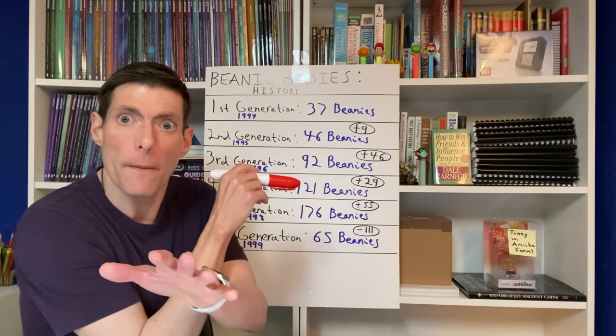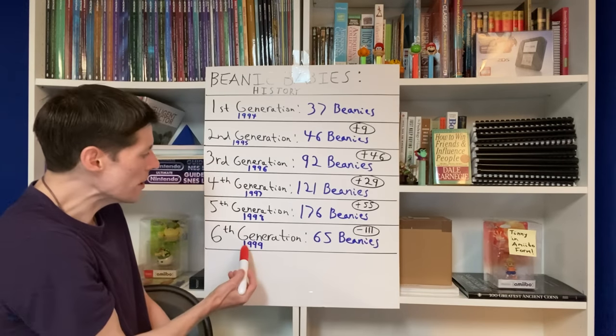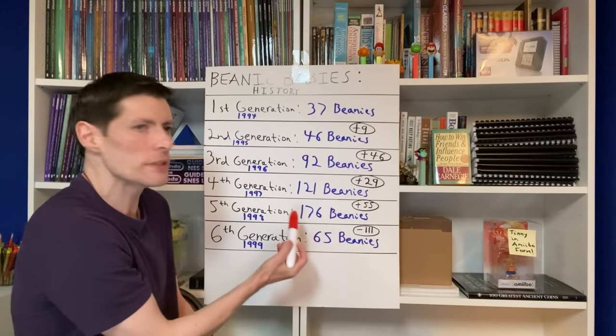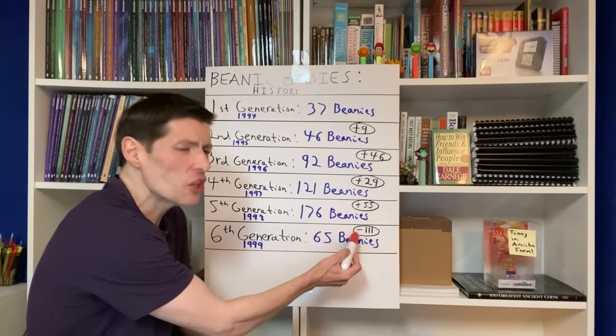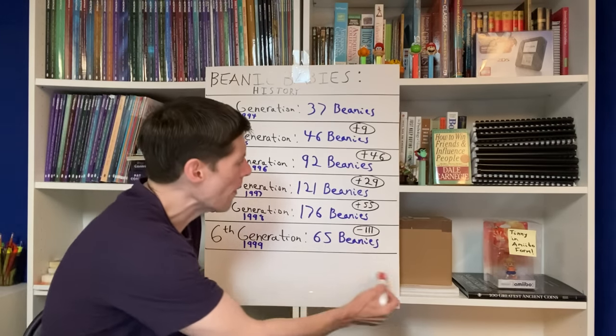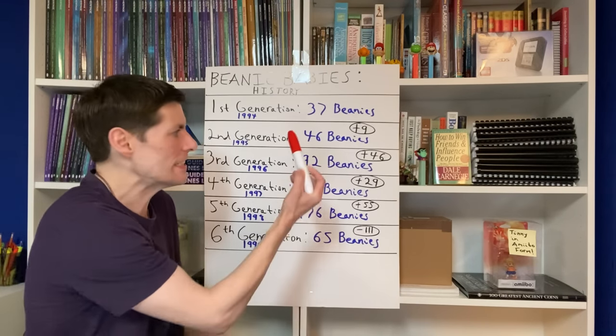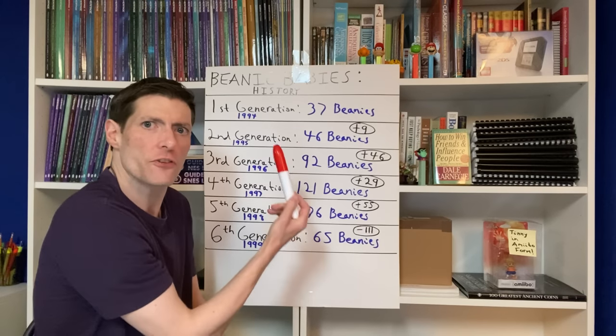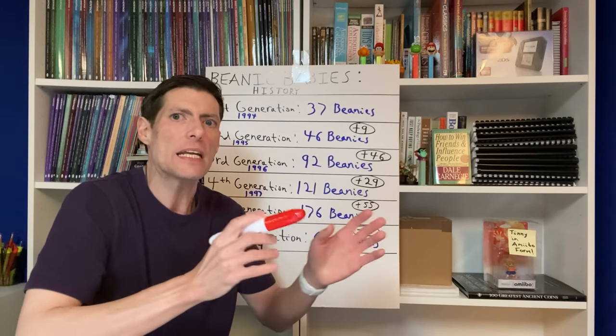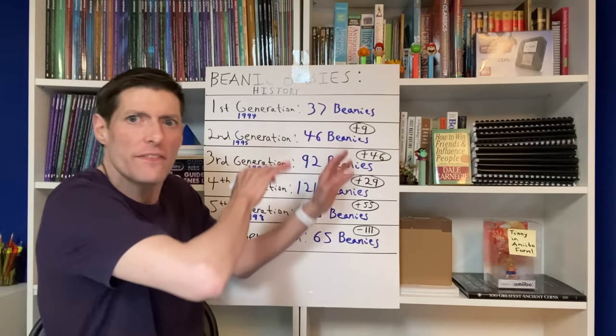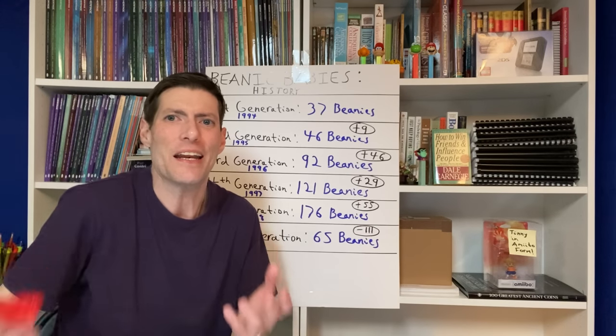The next year is when the bottom officially fell out of the Beanie Baby market. As a matter of fact, Ty was smart. Ty actually saw it coming and he pulled back production. In the year 1999, Ty Corporation only released 65 Beanie Babies into the market. This is a pullback of 111 Beanie Babies from the year before. The manufacturers know how to monitor the secondary markets and the primary markets for their products better than the average speculator, better than the average Timmy Kimmy and Poindexter who are calling these items investments, buying them up and putting them away, thinking they're going to be worth money in the future.